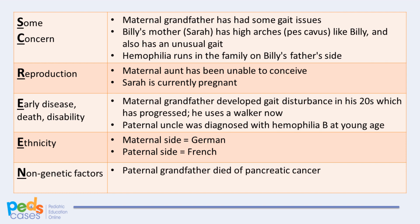When asked these questions, Billy's mother Sarah reports she is wondering if Billy's symptoms might be related to a disorder that runs in the family, as her father has gait issues. Sarah mentions she also has high arches and appears to have a similar gait. She believes her husband has said that hemophilia B runs in his family. Her sister and her husband have struggled with infertility, and Sarah is currently pregnant. Sarah's father developed gait disturbance in his early 20s, which was never formally investigated but has progressed slowly over the decades. He also had high arches and now uses a walker. Billy's paternal uncle was diagnosed with hemophilia at a young age. Her family is German and her husband's family is French. Billy's paternal grandfather died of pancreatic cancer.